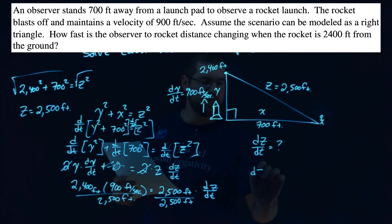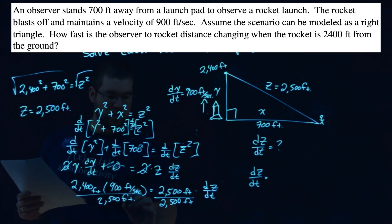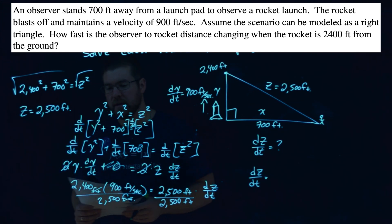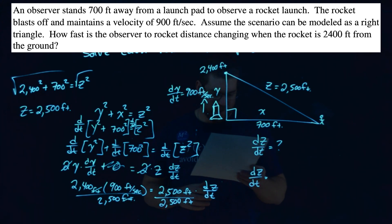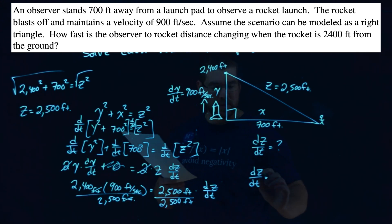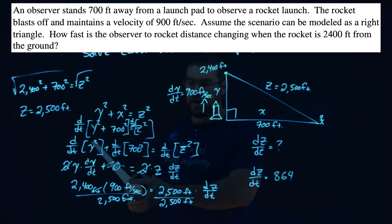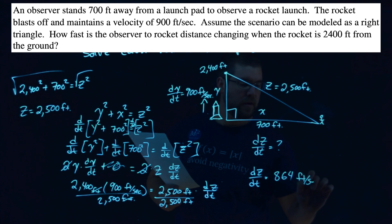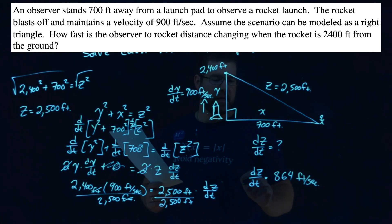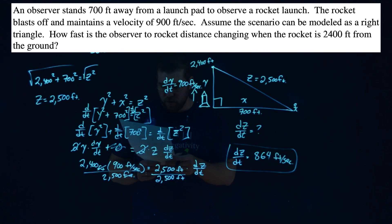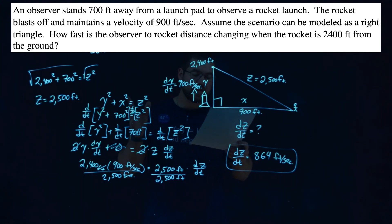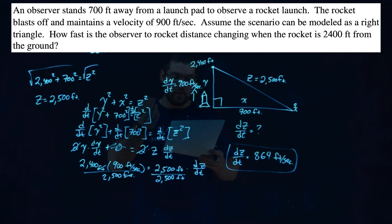And what do we get? We have dZ/dt is equal to, well, look at the units. The feet cancel out right here. And if you take 2,400 times 900, divided by 2,500, it actually comes out to be a nice, neat number of 864. Funny how that happens. And our units left is just feet per second, which makes sense, because it's this linear rate changing. So, how fast is the observer to rocket distance changing when the rocket is 2,400 feet from the ground? Our rate changing is 864 feet per second.